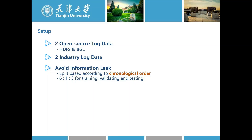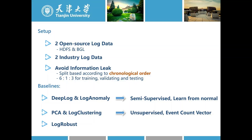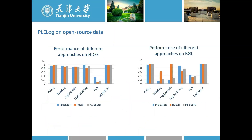We compare the effectiveness of PLE Log with five baseline methods. DeepLog and LogAnomaly are typical semi-supervised methods that use sub-sequences to predict the next log when the system runs normally. PCA and LogClustering are two unsupervised approaches that use event count vectors to cluster log sequences. LogRobust is a supervised approach that utilizes semantic embeddings — we include it to see if our semi-supervised method can achieve close performance to the supervised one.